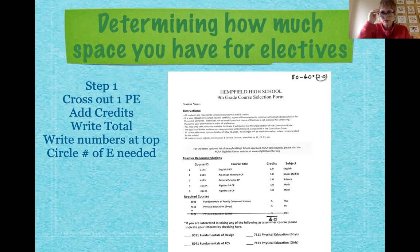For example, this student was recommended to take a credit of English, a credit of history, a credit of science, and two credits of math. At the bottom, they were also required — every ninth grader is required — to take Fundamentals of Family and Consumer Science and PE. Altogether, the student in this example was required to take six credits.